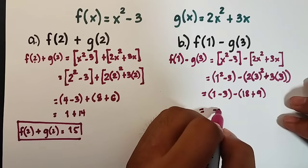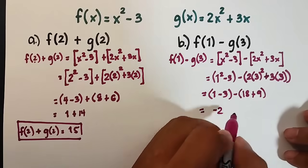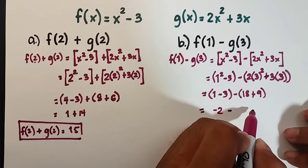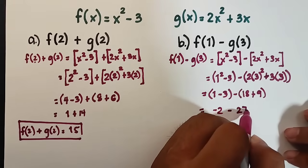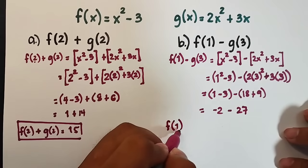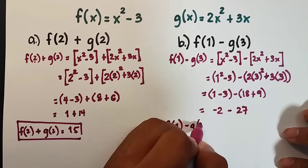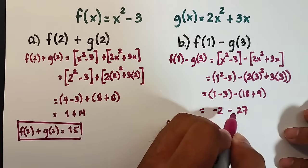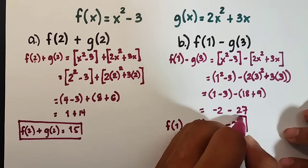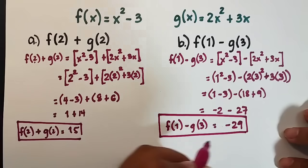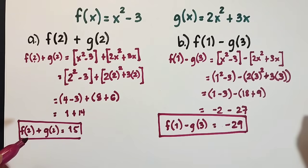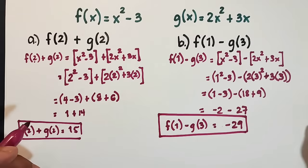Simplify the parentheses: 1 - 3 is negative 2, minus 18 + 9 is 27. And to simplify this, your f(1) - g(3) equals negative 2 minus 27, and that is negative 29. This is the answer. So I hope in our first example, using addition and subtraction, you already know how to perform these operations on functions.